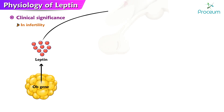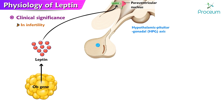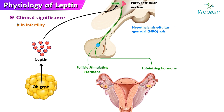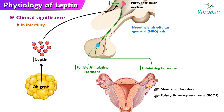In infertility, leptin has been shown to play a role in the regulation of the hypothalamic-pituitary-gonadal axis and the secretion of reproductive hormones. High levels of leptin have been linked to infertility in both males and females, and to the development of menstrual disorders and polycystic ovary syndrome in females.